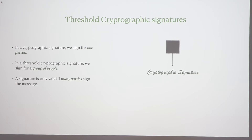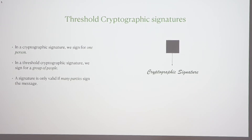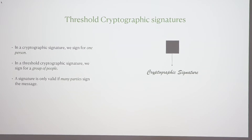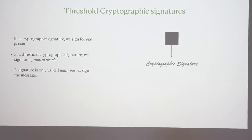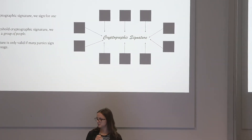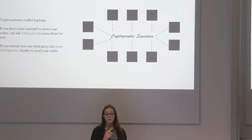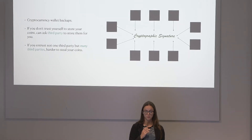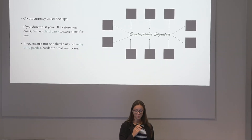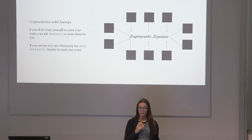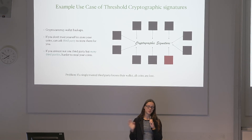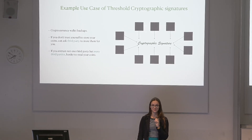With a threshold cryptographic signature we're still trying to generate a signature, but with a normal signature you sign for one person. With threshold schemes you're signing for a group, so the signature is only valid if many people sign that message. In this example, ten people would need to sign. A classic use case is backing up your cryptocurrency wallet — you might not trust yourself to store your coins, so you ask multiple third parties, which makes it much harder for any one of them to steal your coins.